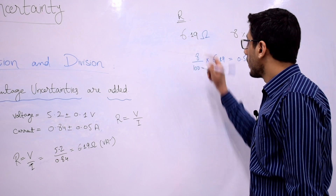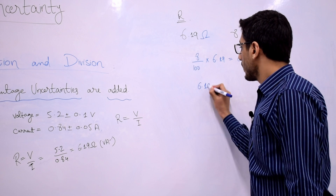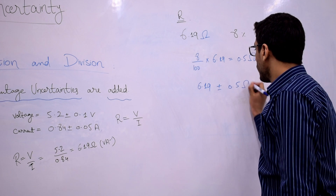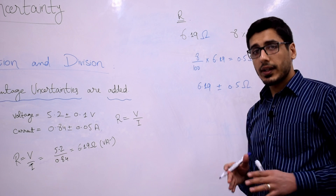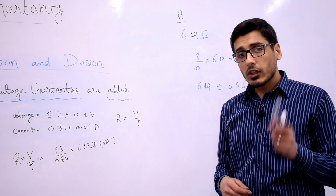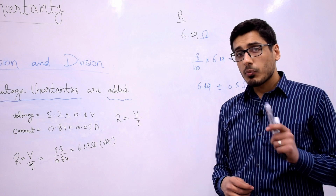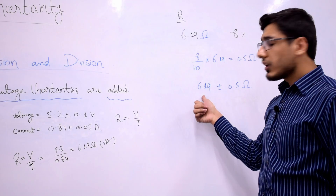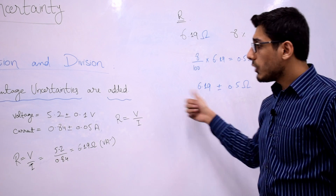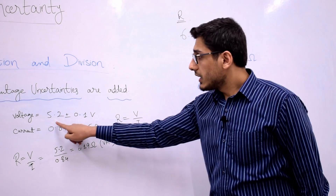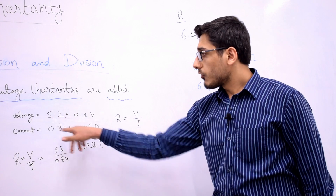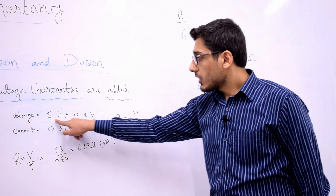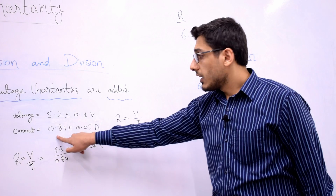Let's write our value for R: 6.19 ± 0.5 ohm. But this is not the final result yet. In the previous video on the rules of significant figures, I explained that in the case of multiplication and division the number of significant figures in your final result are equal to the least number of significant figures in any of your original measurements. You can see that the number of significant figures in our measurements are 2 and 2.